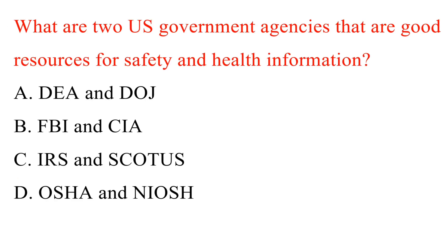Question. What are two U.S. government agencies that are good resources for safety and health information? A. DEA and DOJ. B. FBI and CIA. C. IRS and others. D. OSHA and NIOSH. Answer: D. OSHA and NIOSH.